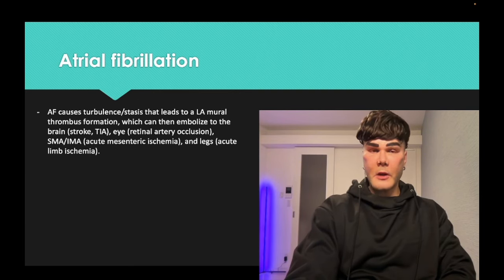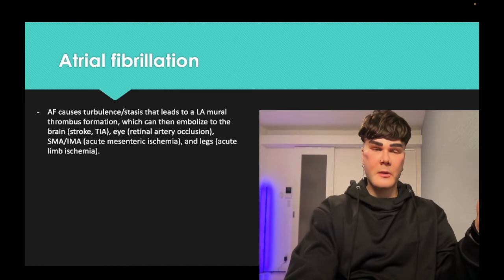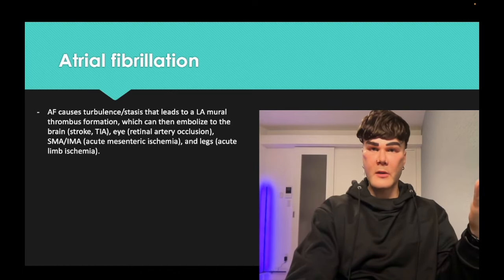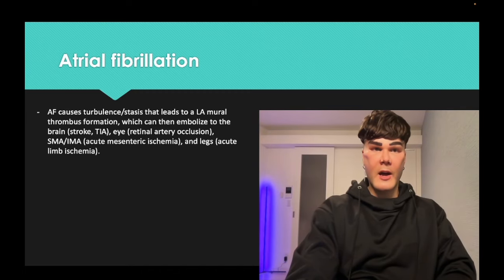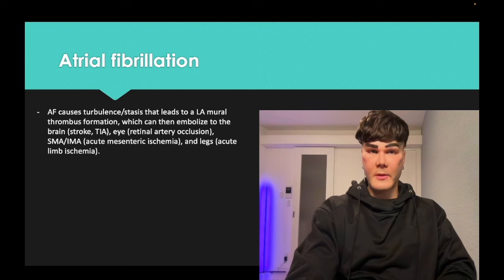The high yield thing about atrial fibrillation for USMLE, apart from the ECG, is that the stasis or turbulence of blood within the left atrium can cause a mural thrombus that can launch off to different parts of the body — the brain or eye causing stroke, TIA, retinal artery occlusion; can go to the SMA or IMA causing acute mesenteric ischemia; can go to the legs causing acute limb ischemia. They love this stuff for USMLE.